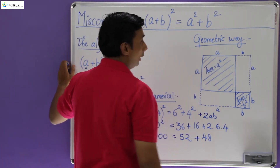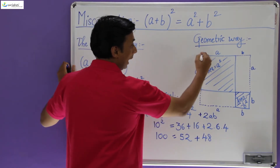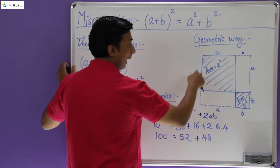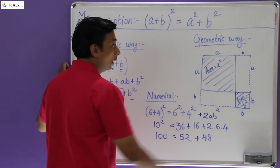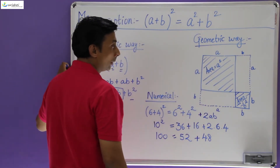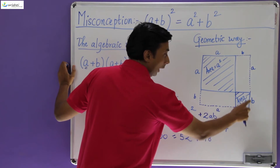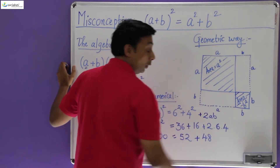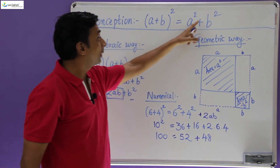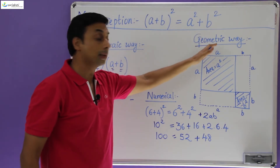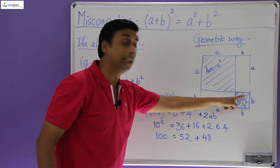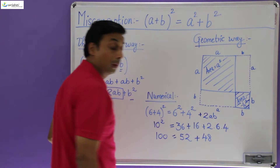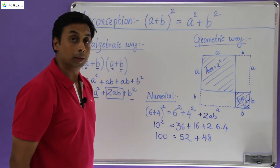Now let me show this using the geometric way. Assume that I have a square of side a — the area of a square with side a is a². I've highlighted that. The area of this shaded square is a². Let's assume another square placed here whose dimensions are b — the area of this small square is b². So if you were to find a² + b², you are finding the combined area of these two squares. Now let's see what is the meaning of (a + b) whole square.